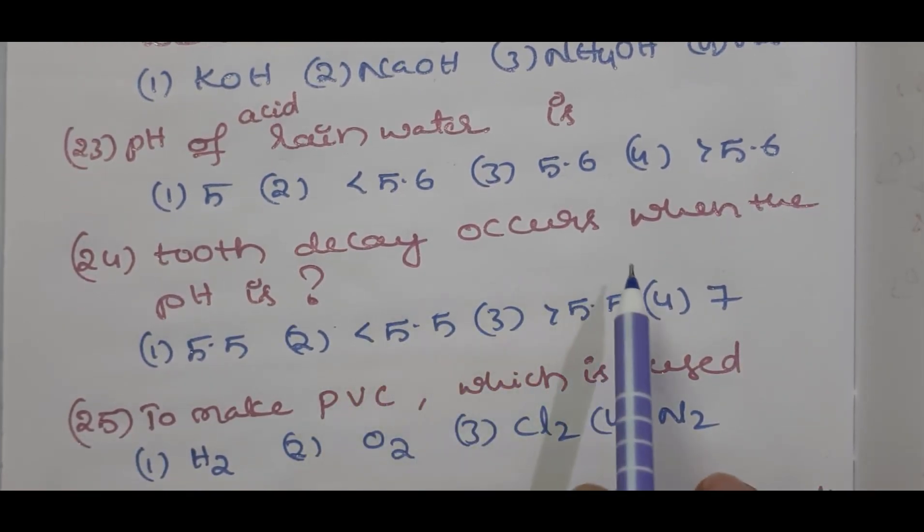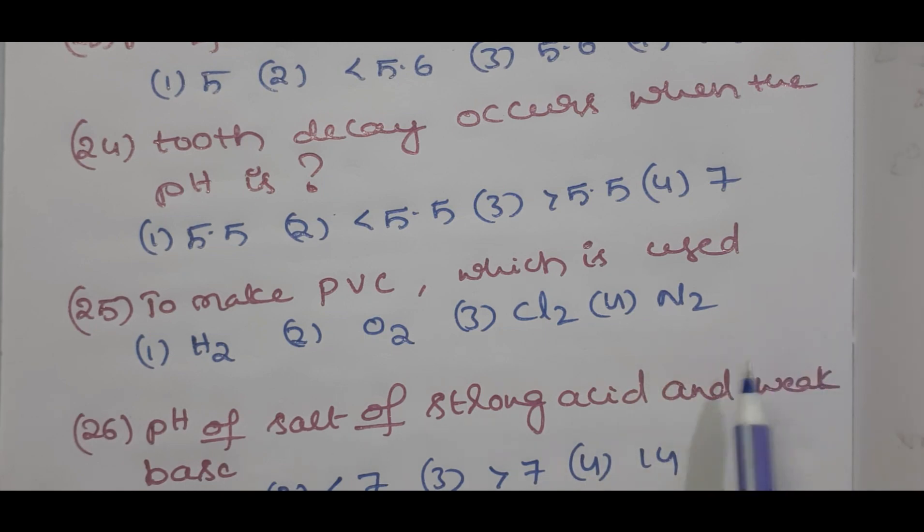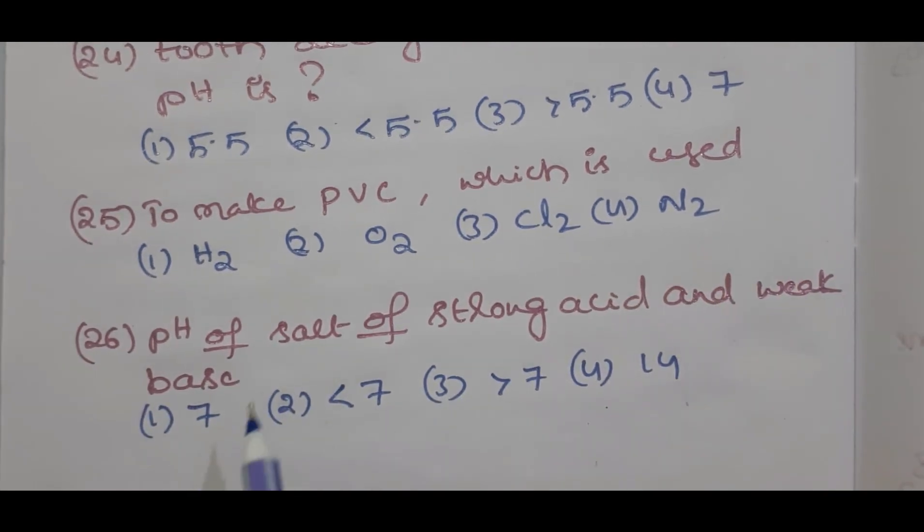Question number 23 students: pH of acid rain water is 5, less than 5.6, 5.6, greater than 5.6? Question number 24: tooth decay occurs when the pH of our mouth is 5.5, less than 5.5, greater than 5.5, 7? Question number 25: for making PVC, that is polyvinyl chloride, which is used - H2 gas, O2 gas, Cl2 gas, N2 gas? Question number 26: pH of salt of strong acid and weak base is 7, less than 7, greater than 7, 14.